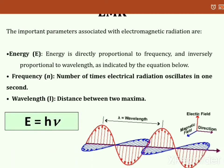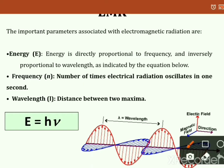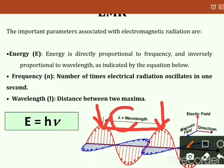Frequency ν is the number of times electromagnetic radiation oscillates in one second. Wavelength, represented by λ, is the distance between two maxima. In the picture, two maxima positions are shown, and the distance between them is the wavelength λ, which is a very important parameter in spectroscopy.